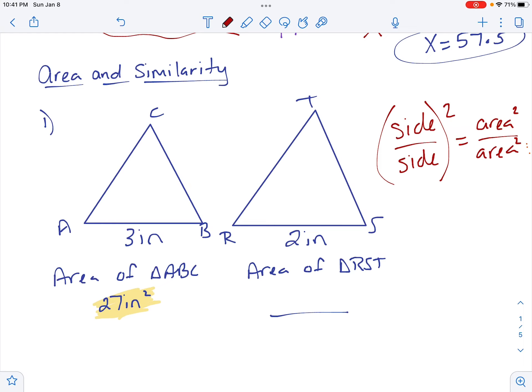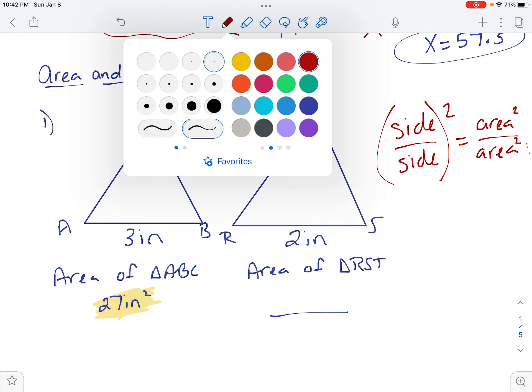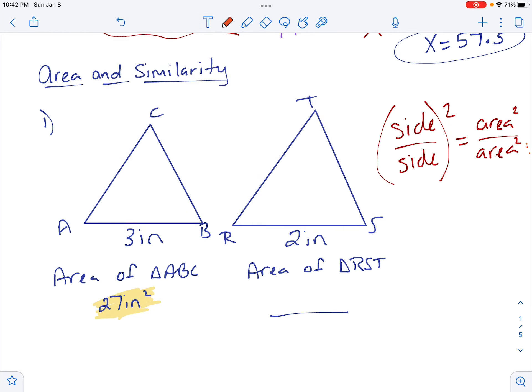We're going to find the area of the second triangle by using triangle similarity. So side over side, 3 over 2. But remember, to get it into the inches squared format, we're going to have to square that. Equals, now 3 is this first triangle right here that's orange, which means that has to be the perimeter that goes on top. So 27 over, we don't know the other one, so X.